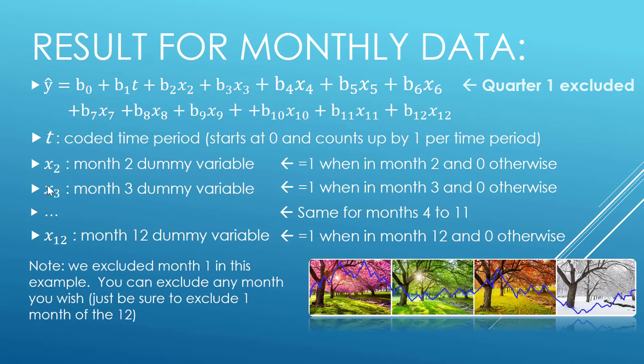This means that it's the same idea for months four through eleven. These coefficients b4, b5, b6, and so on all the way to 11 are just our coefficients for each of those months. See the next video for how to do this in Excel, and then there'll be a final video on how to analyze our results that we get from this method.